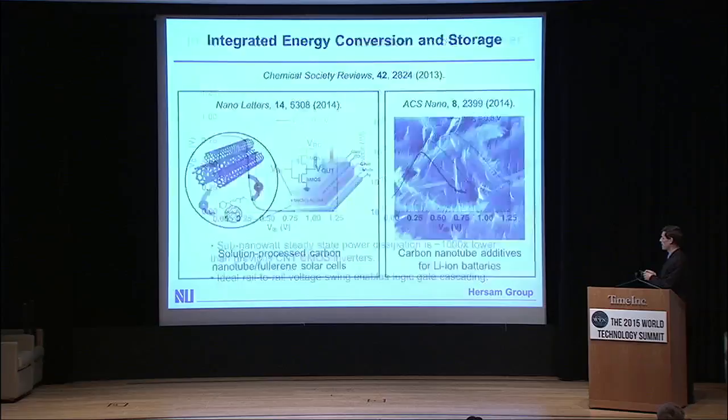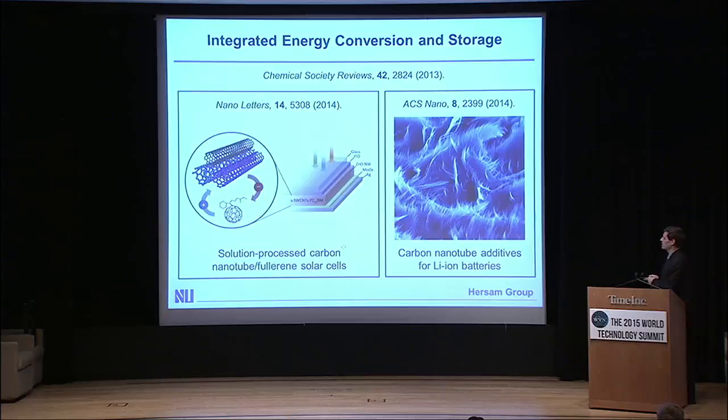We also need to be able to harvest energy and store it. Using the same types of materials such as carbon nanotubes, we can develop solution-processable solar cells. So these barcodes could be harvesting light, converting it into electricity, which can be stored on-chip with the same types of materials in lithium-ion batteries, and that can then be used to power the devices.